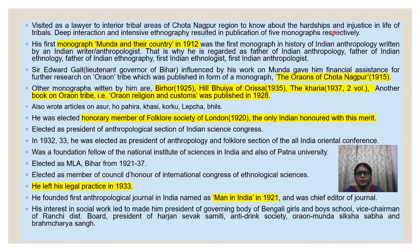His deep interest in knowing about the hardships and injustice in the life of tribals led him to visit the interior tribal areas of the Chotanagpur region. This deep interaction and intensive ethnography with the tribals resulted in the publication of five monographs. The first monograph, Munda and Their Country, published in 1912, was the first monograph written by an Indian author in the history of Indian anthropology. Sir Edward Gait was very influenced by his work and gave him financial assistance for further research on the Oraon tribe.